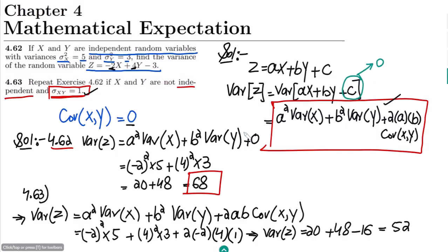You have seen that there is a huge difference when the two random variables are dependent versus independent. When they are independent, covariance is zero and plays no role. When they are dependent, the covariance between them is non-zero and changes the result. That's it for today — if you have any questions, you can ask in the comment box. See you soon.